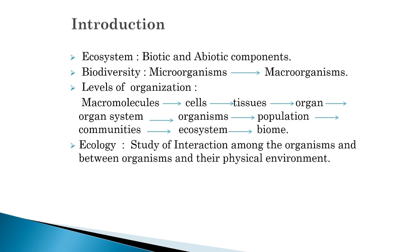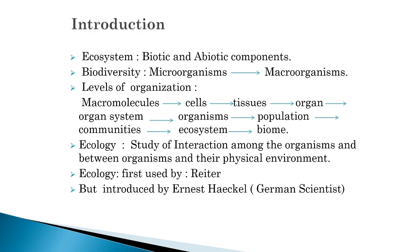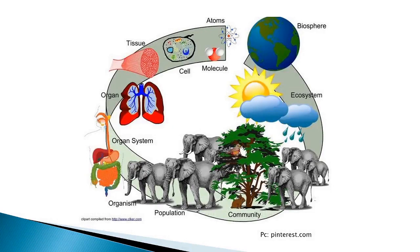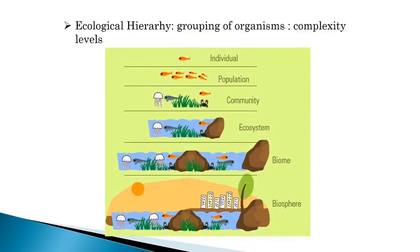Ecology is the study of interactions among organisms and between organisms and their physical environment. The term was first used by the scientist Ritter but was introduced by Ernest Haeckel, a German scientist. Here we can see in the diagram how molecules, through association with different kinds of cells and tissues, transmit through different levels — cells, tissue, organ, organ system, organisms, population, community, ecosystem, and biosphere. This is the ecological hierarchy.